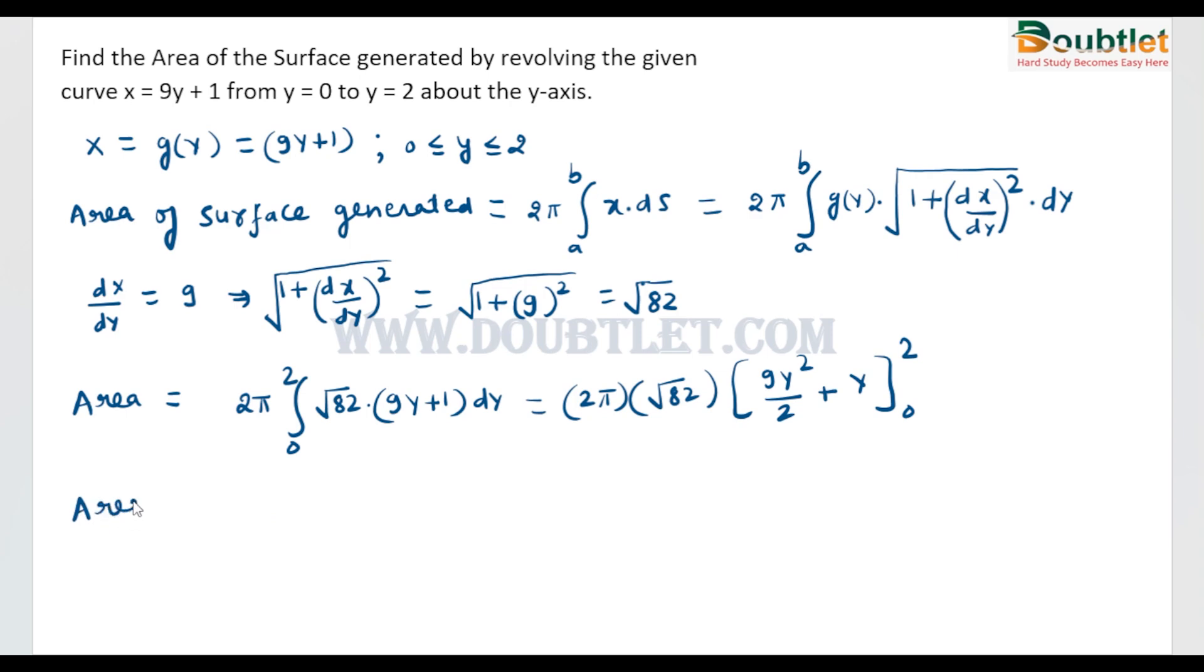So the area is equal to 2 root 82 times π, and this will be 9 times 4 divided by 2 plus 2 minus 0 plus 0.